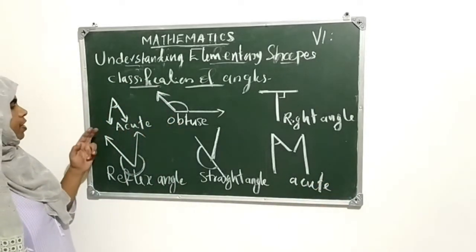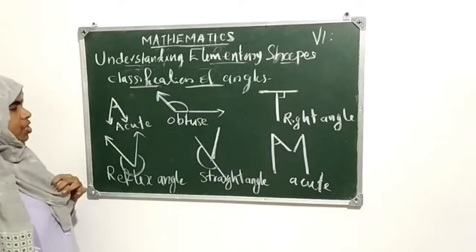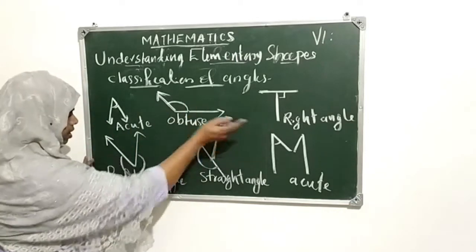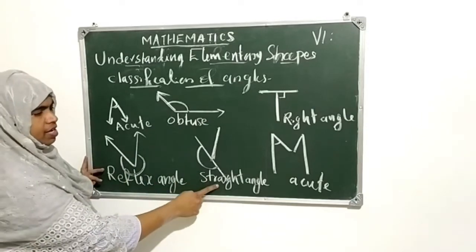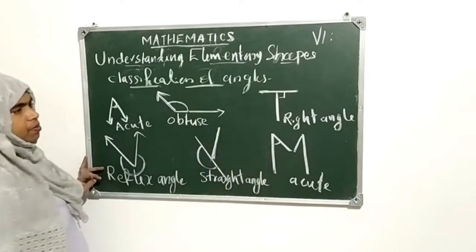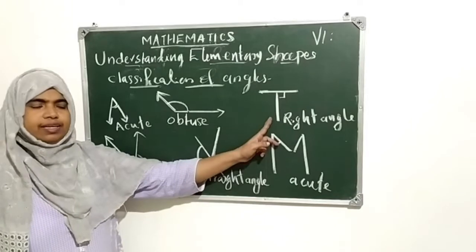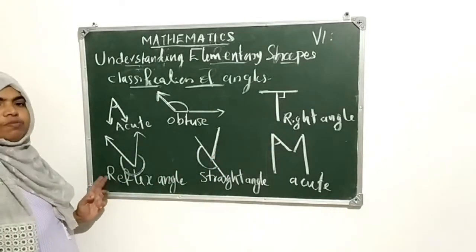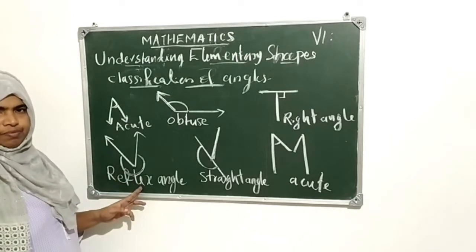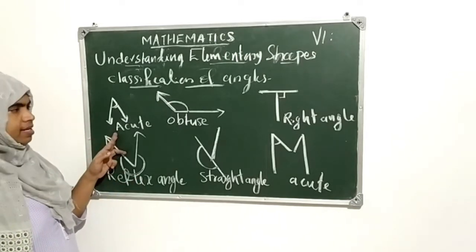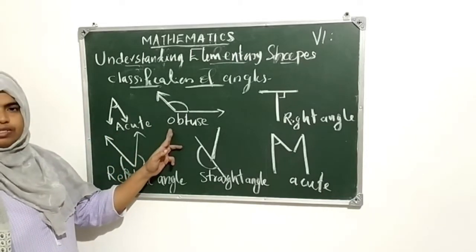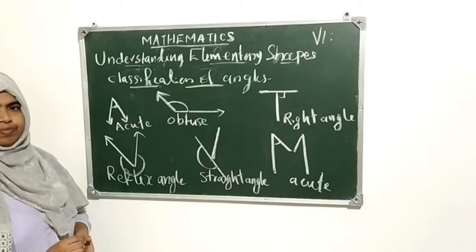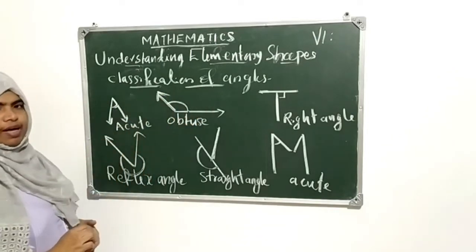So we can see — without measuring, we can say the names. Acute angle, obtuse angle, right angle, reflex angle, straight angle. Right angle means 90 degrees. Straight angle is 180 degrees. Reflex angle means more than 180 degrees. Acute angle means less than 90. Obtuse means greater than 90. These are the classification of angles.